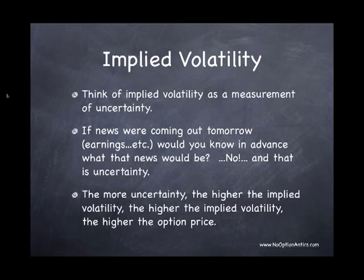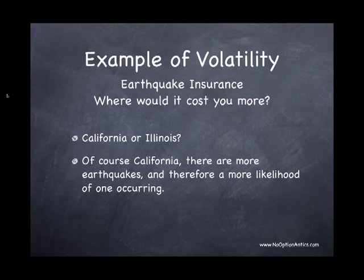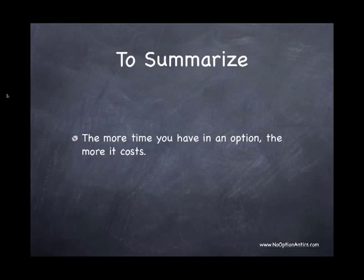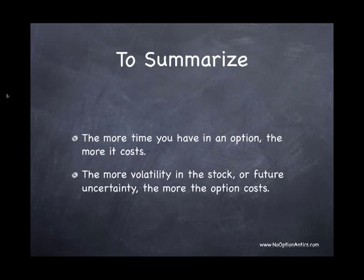The more uncertainty in the market or on a particular stock, the higher the implied volatility and the higher the cost of the options. Here's an example relating it to earthquake insurance: I'm originally from Chicago, Illinois, and now living in Southern California. Where would earthquake insurance cost more? Obviously Southern California, because that's where earthquakes happen and things move. Just like your stocks — the more the stock moves, the more the option will cost you. To summarize: the more time you have in an option, the more it costs; the more volatility, the more it costs; plus the real value of the option.